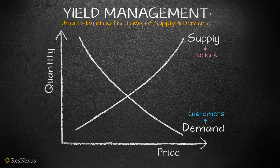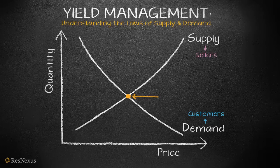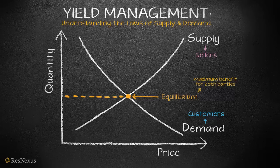For customers, when goods get expensive, demand drops. But for sellers, when goods sell at a high price, supply rises. You can see that the relationship between price and quantity is opposite for customers and sellers. This point, where the two graphs intersect, is reached when supply and demand are equally matched. This is when the economy is at what we call equilibrium — when everything is operating at maximum efficiency, because there are customers for all the goods and goods for all the customers.